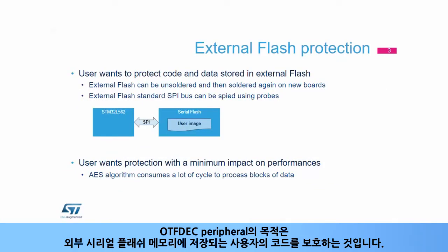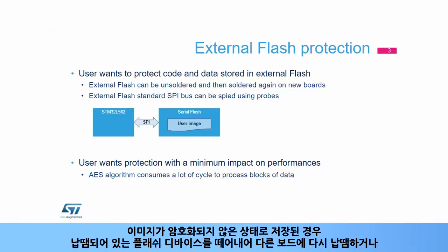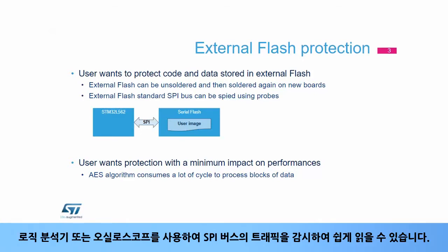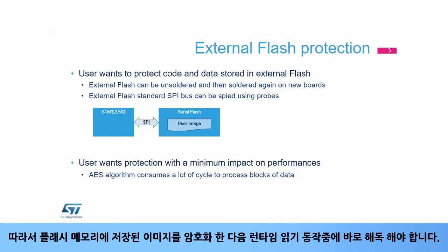The purpose of the OTF-DEC peripheral is to protect user code and data stored in external serial flash memory. If the image is stored unencrypted, it's easy to read it by either desoldering the flash device and re-soldering it on another board, or by spying the traffic on the SPI bus using a logic analyzer or an oscilloscope. Consequently, the image stored in flash memory should be encrypted and then decrypted on the fly during runtime reads.